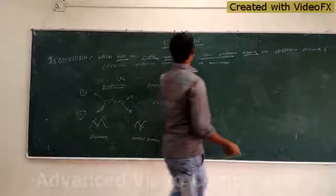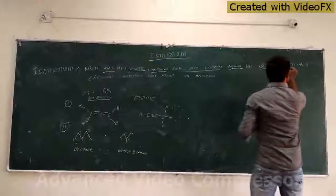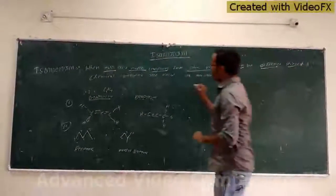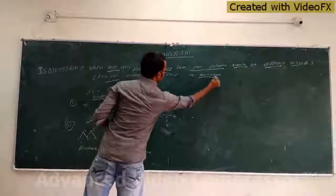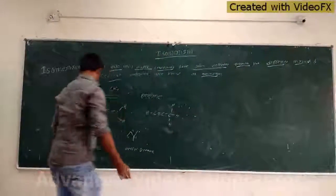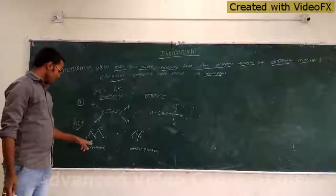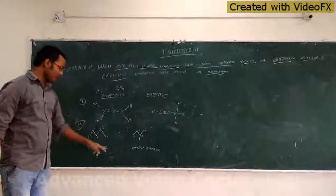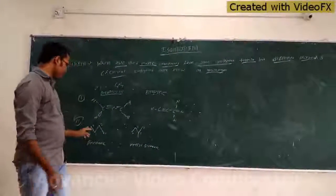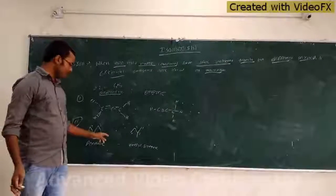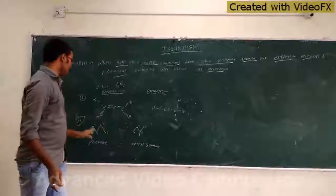So when two or more compounds have the same molecular formula but different physical and chemical properties, we say they are isomers. Just see another example — this is pentane and this is methyl butane. Both have the same molecular formula, but the structure and chemical properties are different.